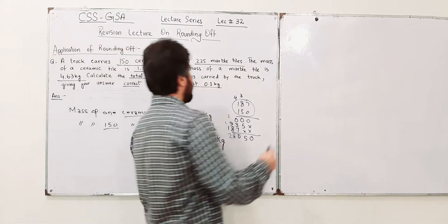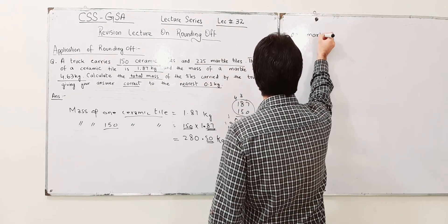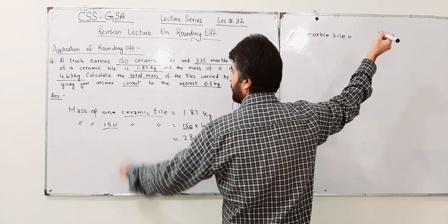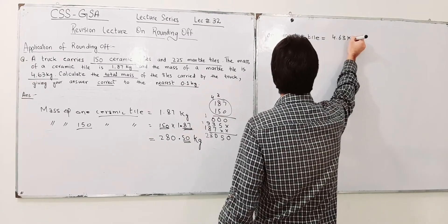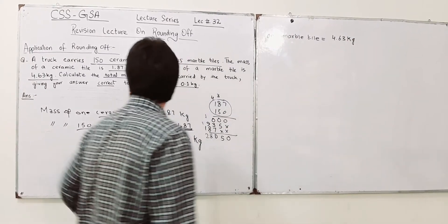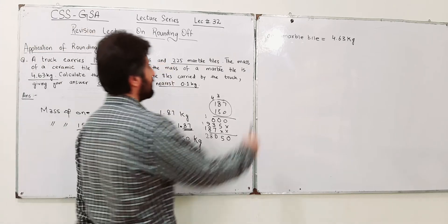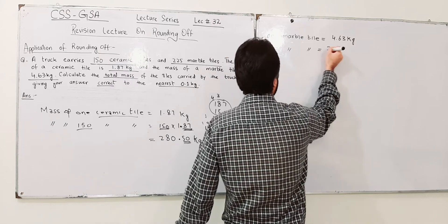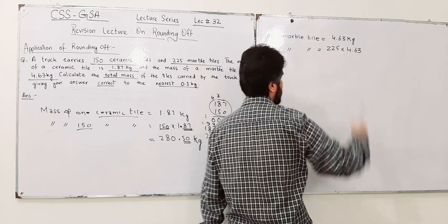Now you find out the mass of marble tiles. So one marble tile is basically equal to 4.63 kg. This is mass of 1 marble tile. You have to find out the mass of 225 marble tiles. So 225 marble tiles will be equal to 225 times mass of 1 tile, which is 4.63.